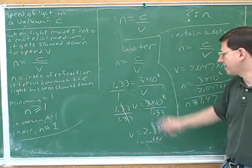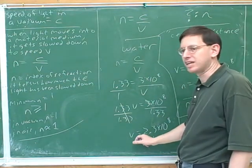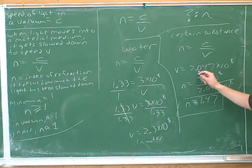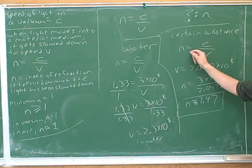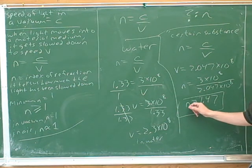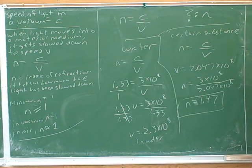So first of all, we had to use this formula for water, and that gave us the speed of light in water. And then they told us that the speed of light in this certain substance was 89% of that. Then we could use the equation all over again. So you can see every substance has a different n, because every substance slows the light down by different amounts.